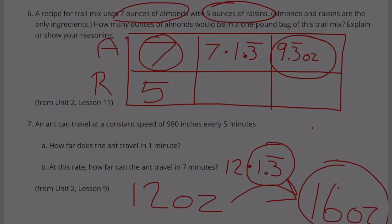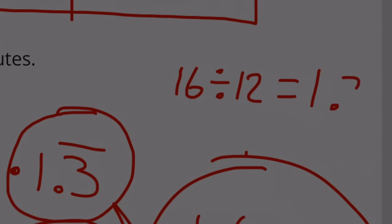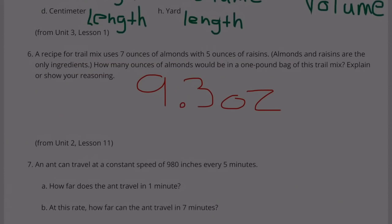So since there's 16 ounces in a pound, we needed to multiply 12 ounces times 1.3 repeating to get 16 ounces. So we needed to multiply the 7 ounces of almonds times 1.3. And I figured that out by doing 16 divided by 12. 16 divided by 12 gave me 1.3 repeating. So then we multiply this times 7 and we get our answer: 9.3 ounces of almonds in a 1 pound bag of trail mix.